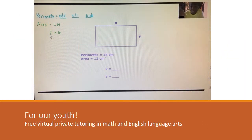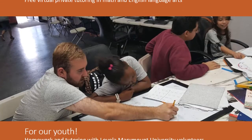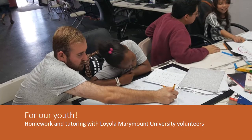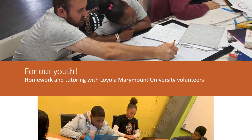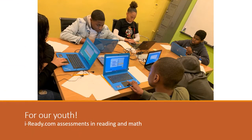C has one, two, three, four, five, six, seven, eight, nine, ten lines. And D has one, two, three, four, five, six lines.